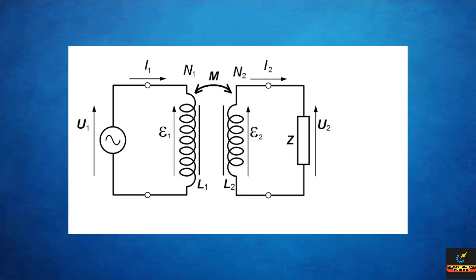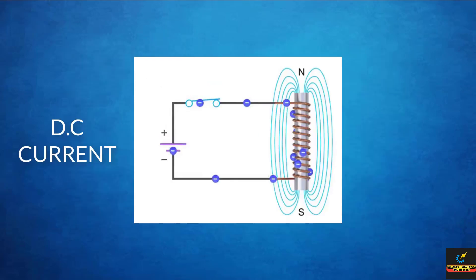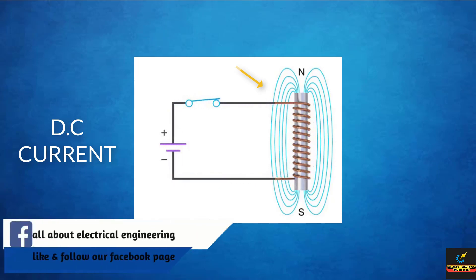First, an alternating voltage V1 is applied to the primary winding of the transformer. It produces an alternating current in the primary winding. We all know that if we apply a direct current to a coil of wire, it produces a constant magnetic flux because the direction of the current is constant.